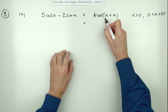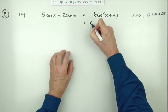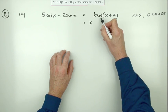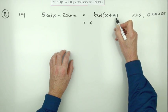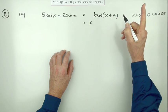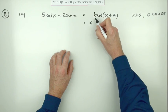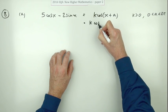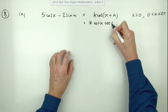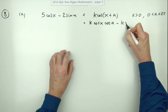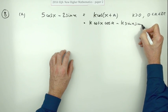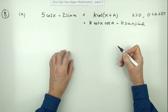The way they want you to do this is to expand using your addition formulae, your compound angle formulae. Look up the front for cos of the sum of two angles and you'll find cos cos minus sine sine. So it's k times on both: k cos x cos a minus k sin x sin a. Doing that gets you the first mark.